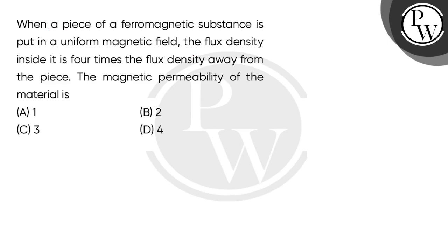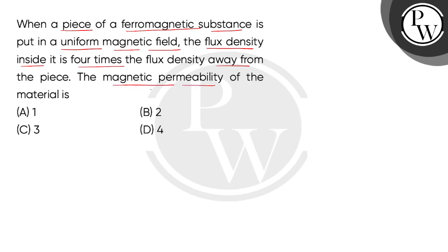Hello guys, let's read the question. When a piece of a ferromagnetic substance is put in a uniform magnetic field, the flux density inside it is 4 times the flux density away from the piece. The magnetic permeability of the material is?